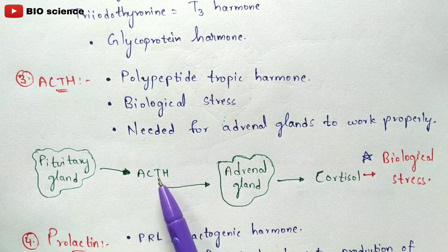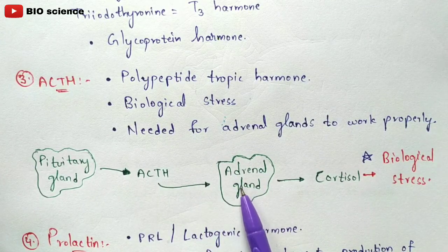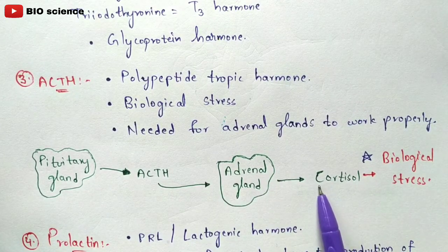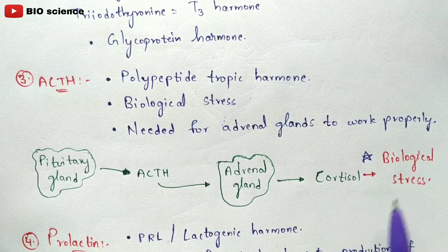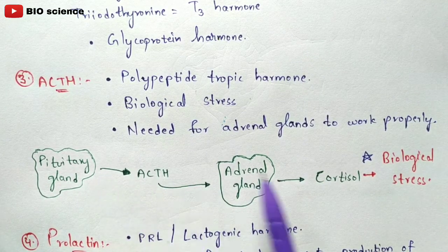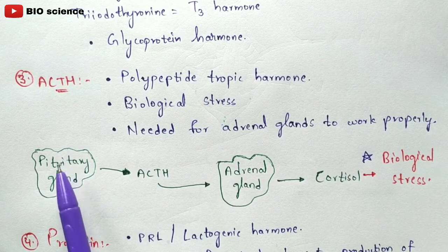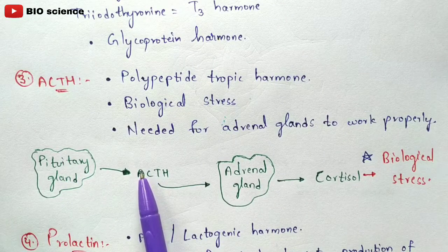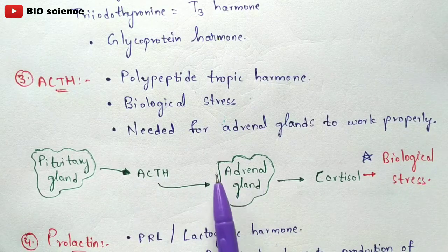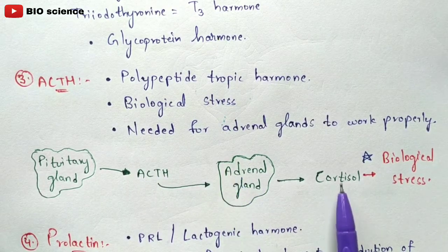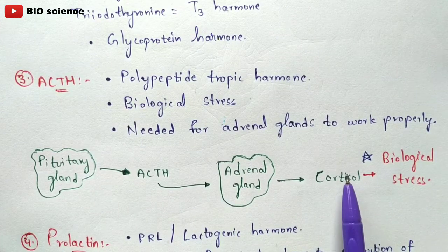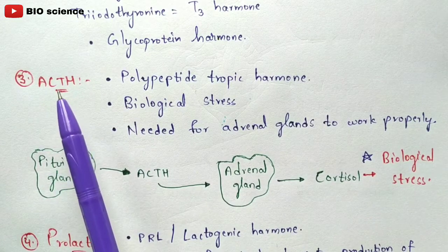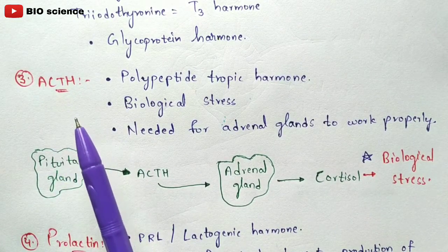Once ACTH stimulates the adrenal gland, the adrenal gland releases cortisol. This cortisol is responsible for the biological stress response. So from the anterior pituitary gland, ACTH is released, it stimulates the adrenal gland, the adrenal gland releases cortisol, and this cortisol is responsible for biological stress.